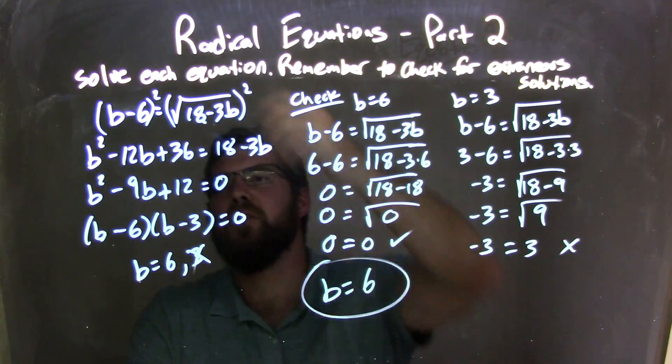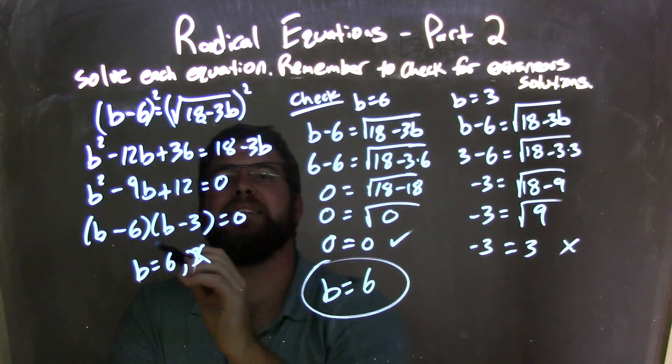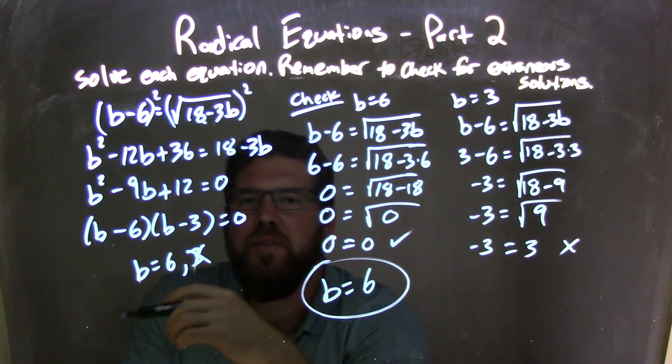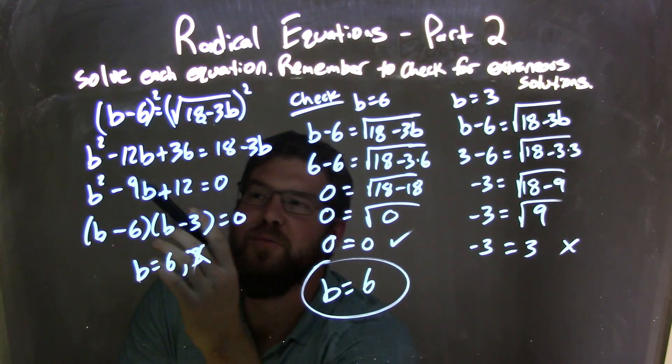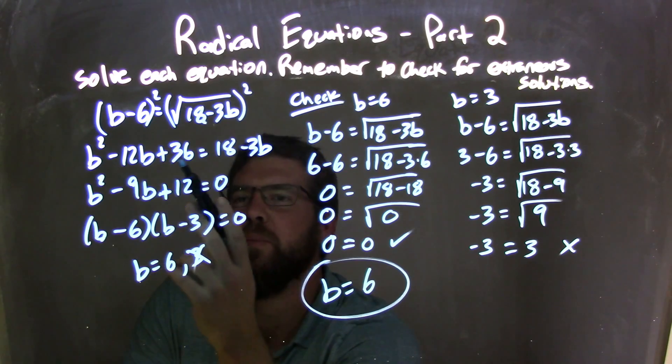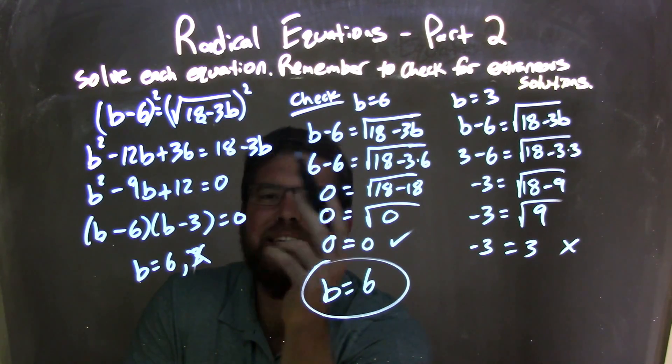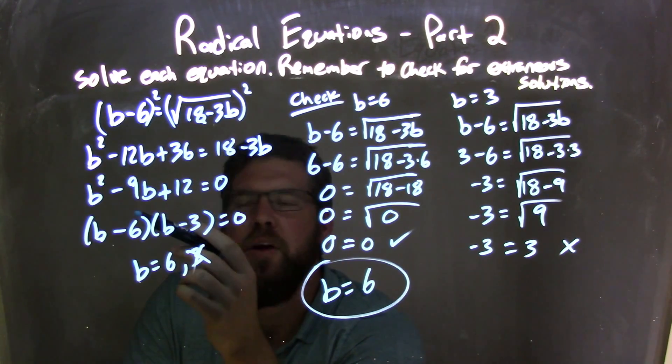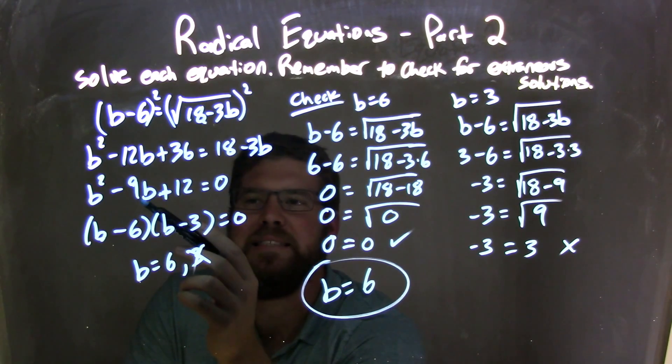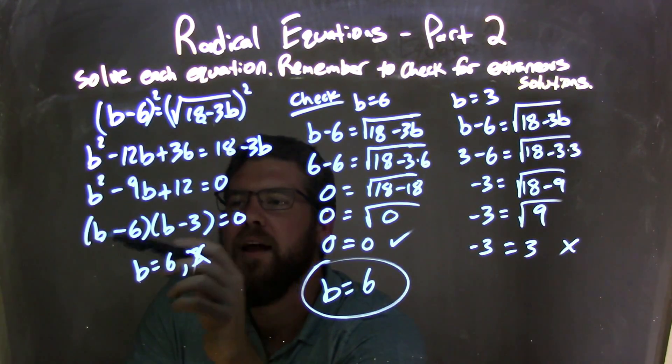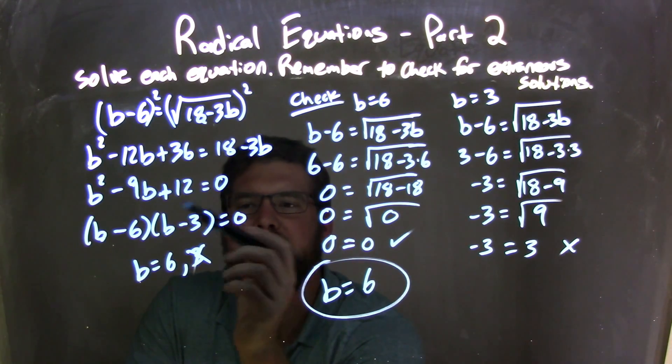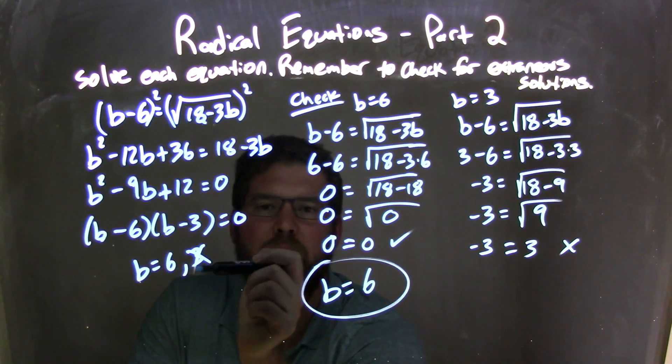So let's recap. We start with b minus 6 equals the square root of 18 minus 3b. I squared both sides to eliminate the square root, then I had to distribute that b minus 6 times b minus 6, which gave me b squared minus 12b plus 36, which is equal to 18 minus 3b. Brought everything over to the left, which gave me b squared minus 9b plus 12 equals 0. And I factored that, got b minus 6 times b minus 3, set both parts equal to 0, and got b equals 6 and 3.